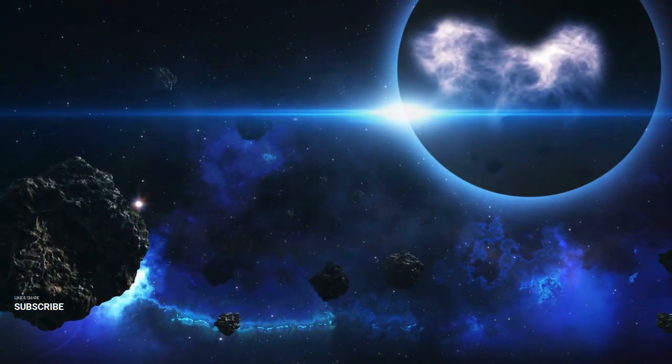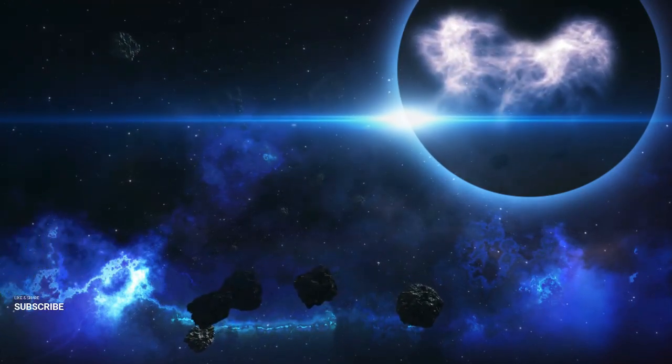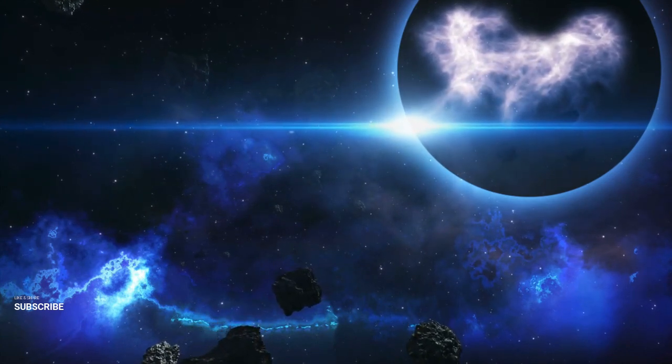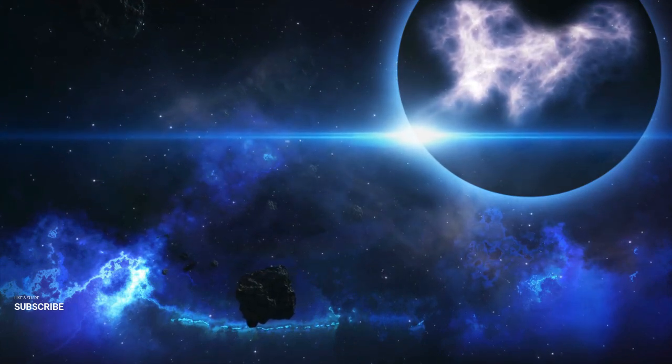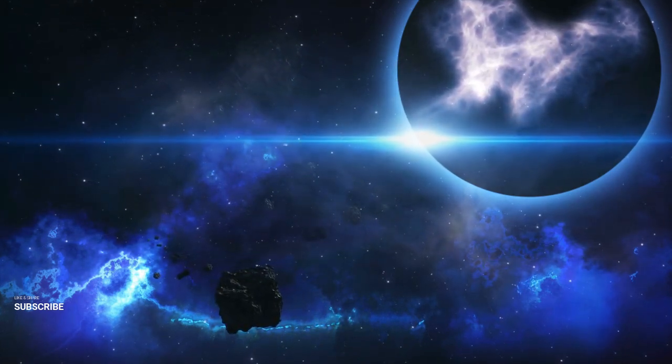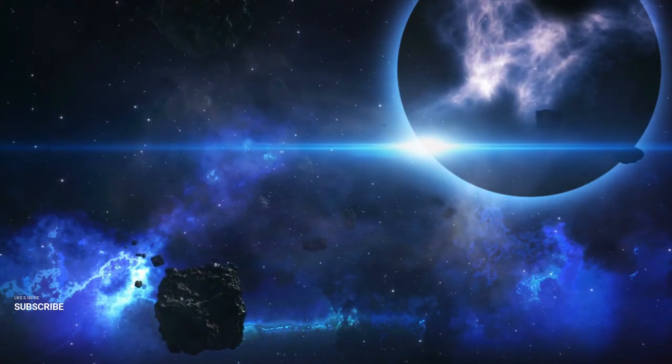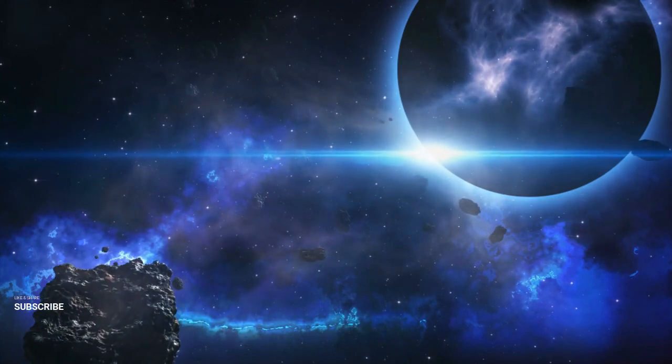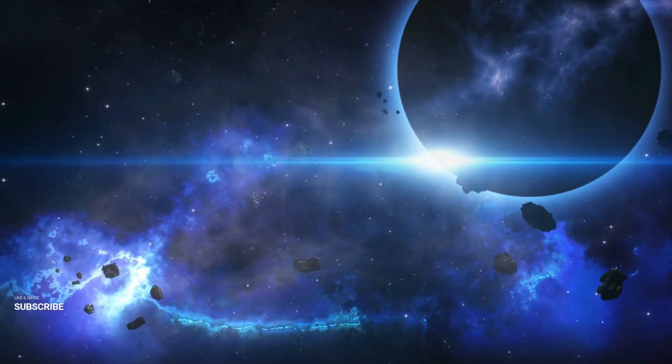Next in line are brown dwarfs, celestial bodies with masses below 0.8 times that of the Sun. Brown dwarfs stand out because they lack the necessary mass to sustain nuclear fusion in their cores, placing them in a unique category between the massiveness of Jupiter and that of a typical star. Though often labeled as failed stars, brown dwarfs exhibit a range of colors, from orange and red to predominantly magenta, rather than just brown.